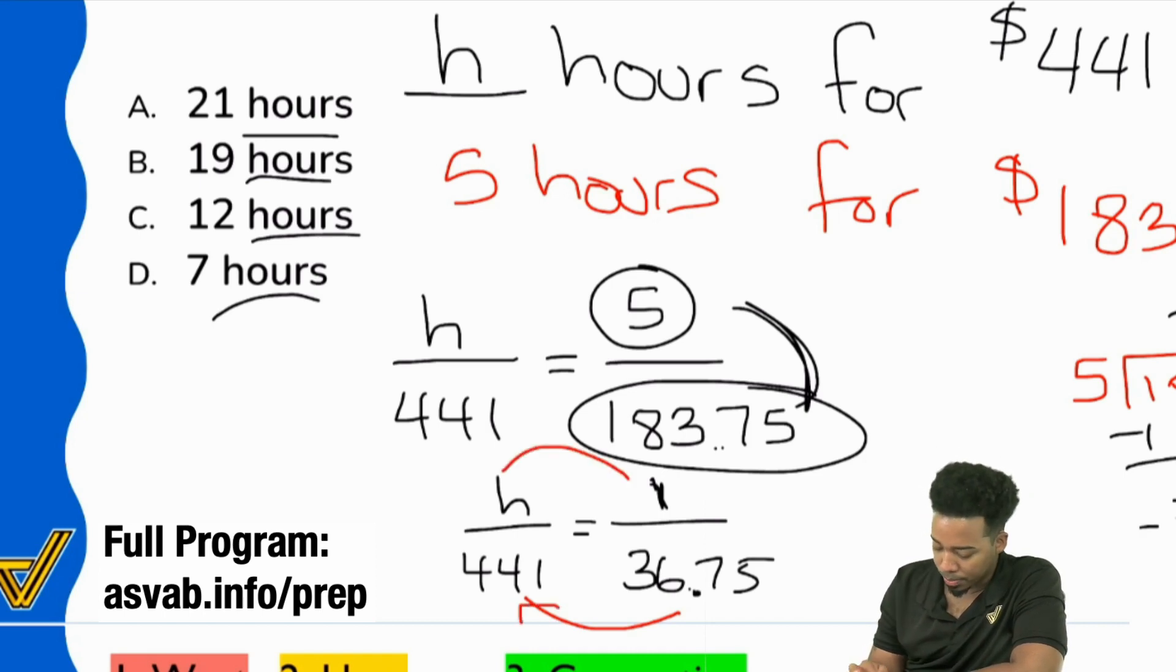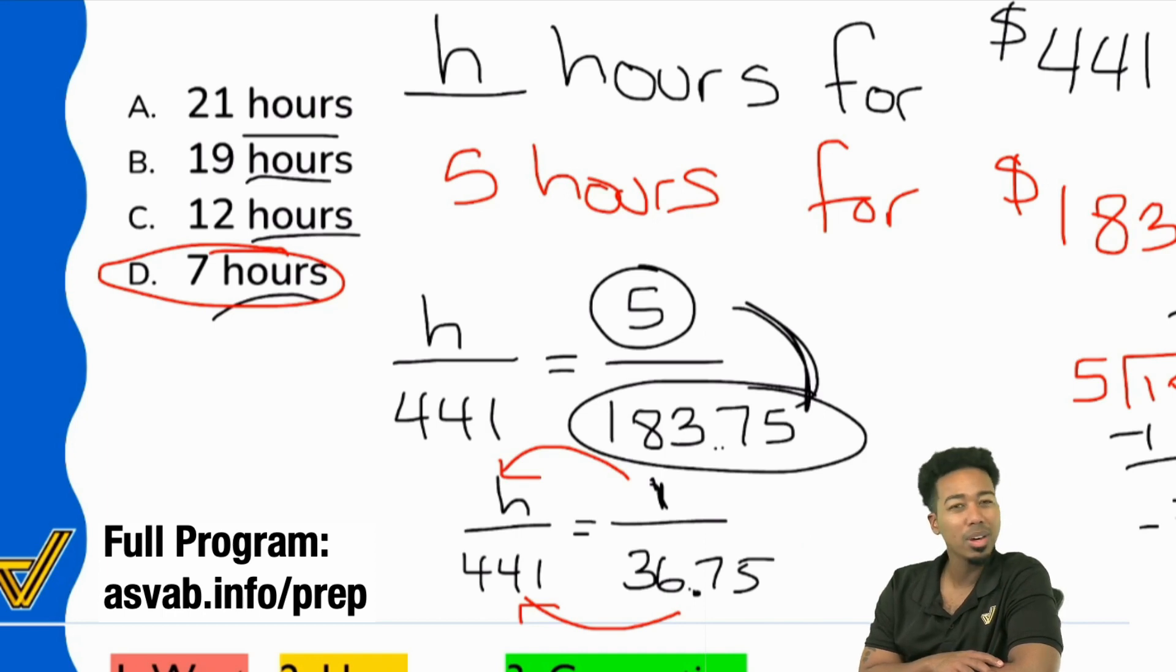Everyone, quick question. If I multiply 36.75, if I multiply that by 10, am I going to be below or over 441? If I do 36 and some change, 36.75, if I do that times 10, am I going to be below or above? I'm going to be below, right? So if I multiply by seven hours, is that going to be at 441? If I multiply by something even smaller than 10, am I going to get there? No, I'm not going to get there.